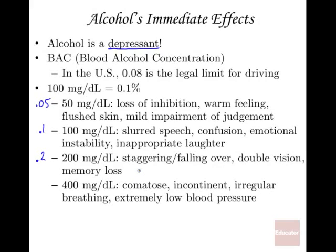At 0.2 BAC people can get blackout drunk, meaning they wake up with no memory of what happened. This is reaching the point of alcohol poisoning — the person may suddenly become unconscious and have labored breathing, and depending on the person, could die. At 0.3 BAC, for the average person, this is definitely alcohol poisoning. That person should be going to a hospital; their brain is severely impaired by the alcohol in their bloodstream.